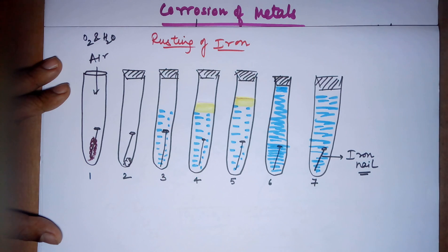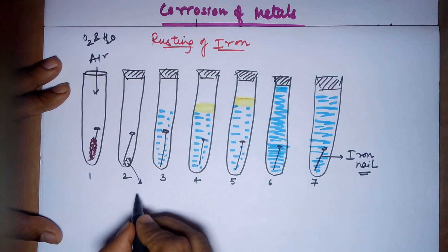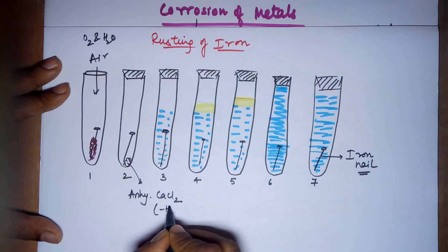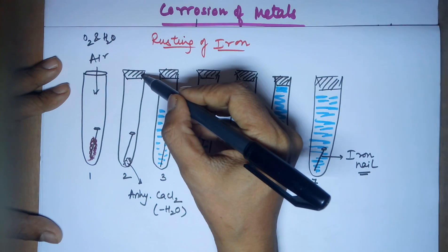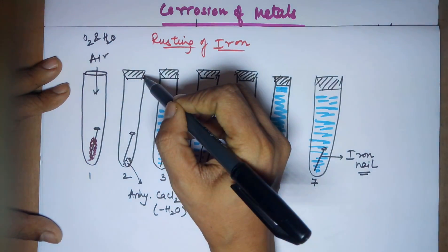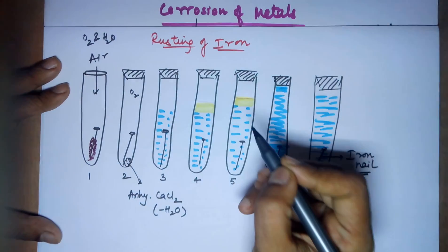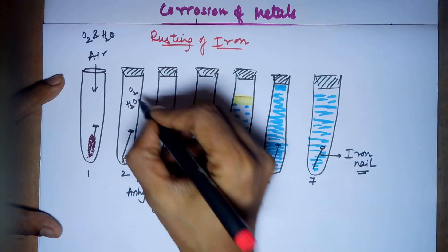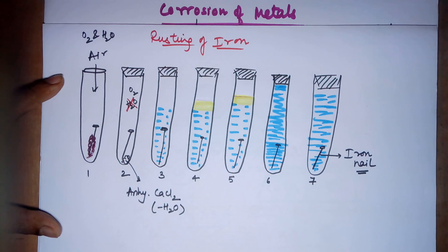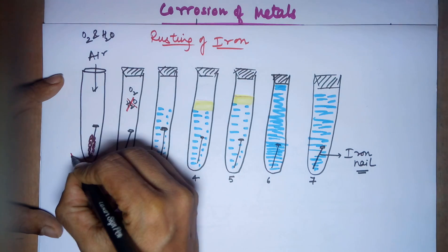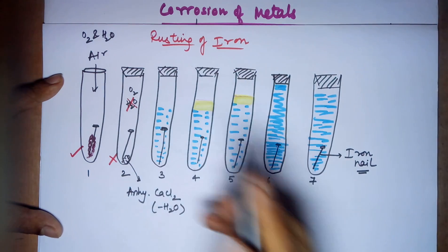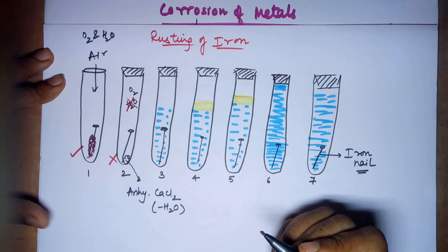In test tube two, the solid kept inside is anhydrous calcium chloride. Anhydrous means without water. Calcium chloride is a dehydrating agent — it has a tendency to absorb moisture. The test tube is corked, so only the air already inside is available, meaning oxygen is present. However, any moisture has been removed by the calcium chloride. Hence, there is no moisture, and the conclusion is no rusting. Test tube two has no rusting because only oxygen was available with no water.